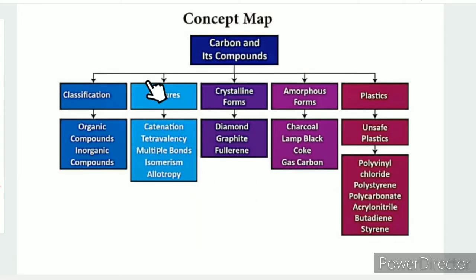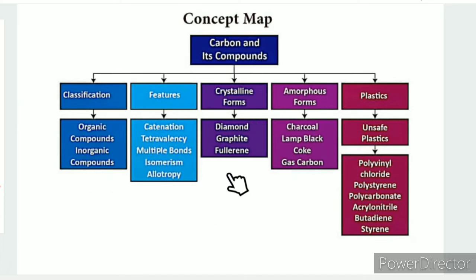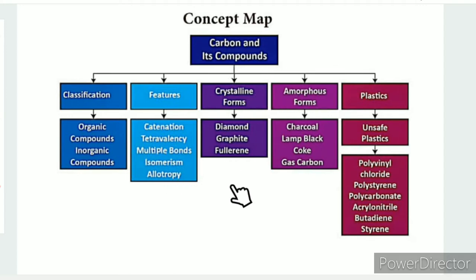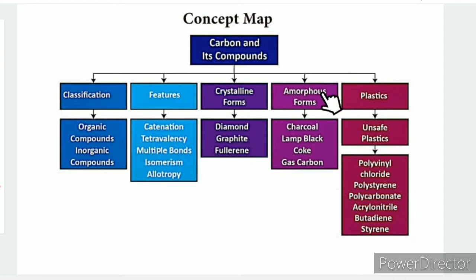In the concept map, carbon is classified into carbon compounds. Carbon compounds are very important to understand. These can exist in crystalline form or amorphous form. In the crystalline form, carbon atoms are arranged in a structured pattern, whereas in the amorphous form, carbon atoms are randomly connected.